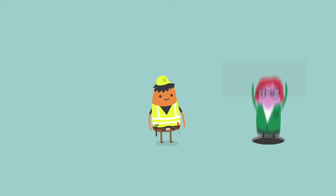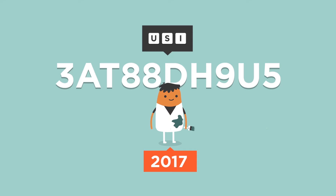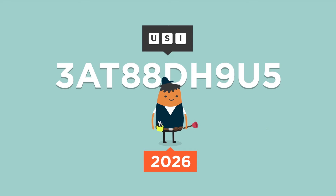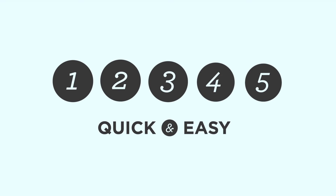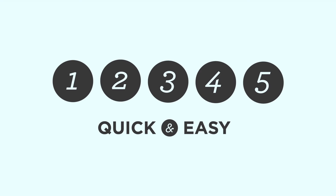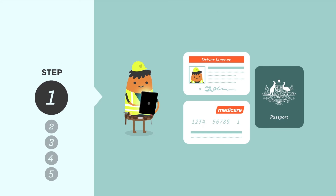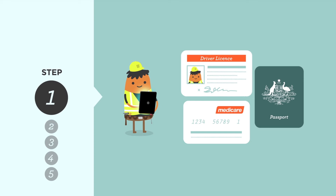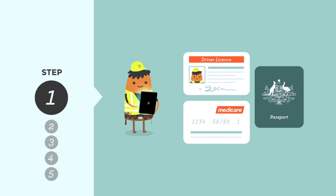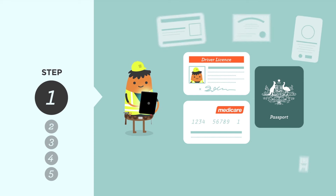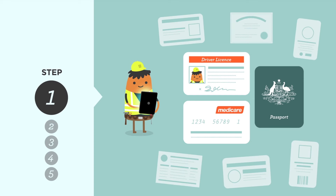You only need one USI number for all your training and it's yours for life. To create your USI, just follow these quick and easy steps. Firstly, visit the USI website and have one form of valid ID ready. This could be your driver's licence, Medicare card, passport or any other listed on the website.